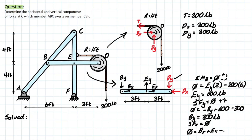Now, which member do we move to — ABC or CEF? We'll go to CEF first. The roller at F gives only one reaction (Fy), while the pin at A gives Ay and Ax. Choosing CEF first allows us to work with fewer unknowns. Let's see what we're working with in CEF.